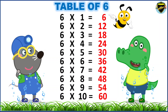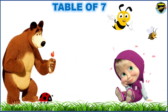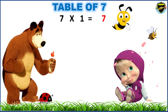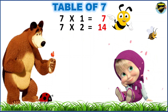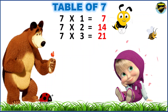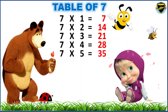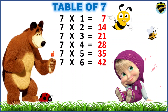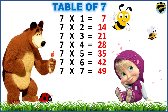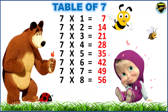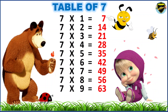Now, let's learn the table of 7. 7 1s are 7. 7 2s are 14. 7 3s are 21. 7 4s are 28. 7 5s are 35. 7 6s are 42. 7 7s are 49. 7 8s are 56.